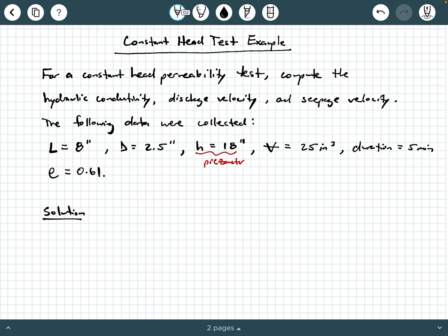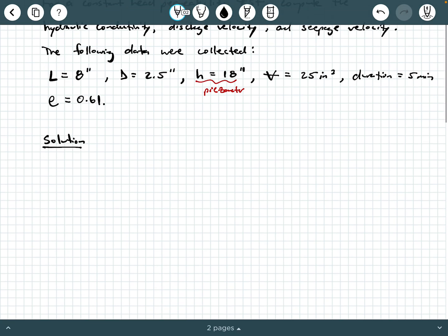So let's go ahead and start calculating these things. Let's start with the hydraulic conductivity. So we're going to say K is the hydraulic conductivity. And K is going to be equal to volume of water collected times the specimen length divided by the cross-section area of flow times that constant head that was established times the duration of the test.